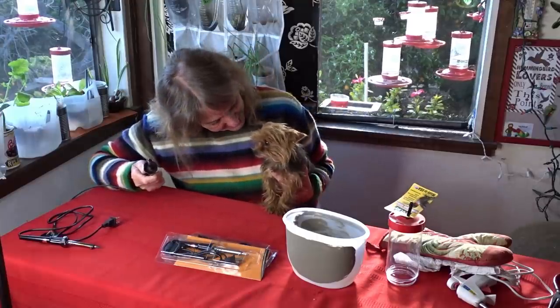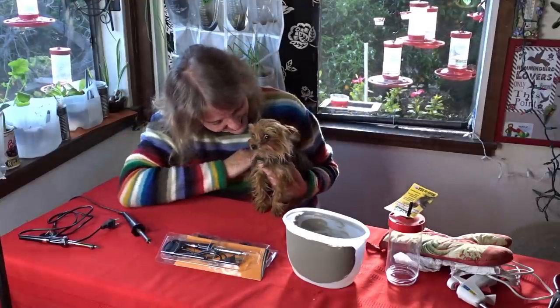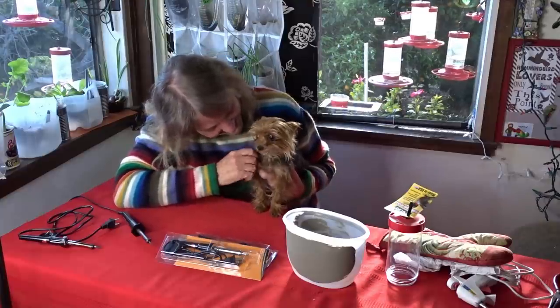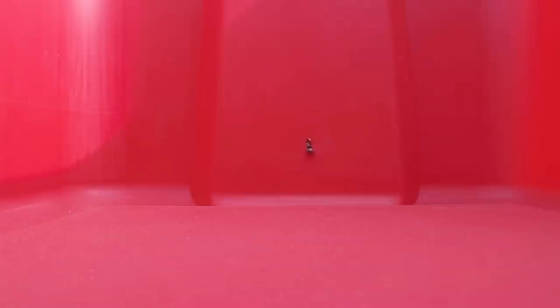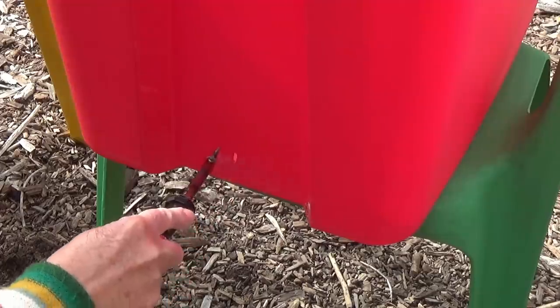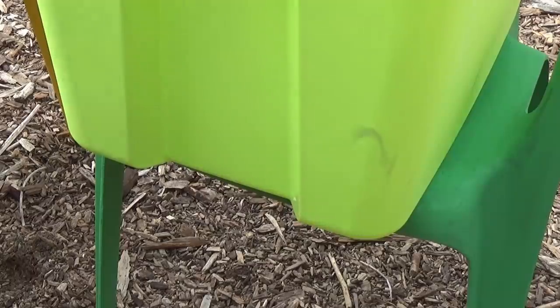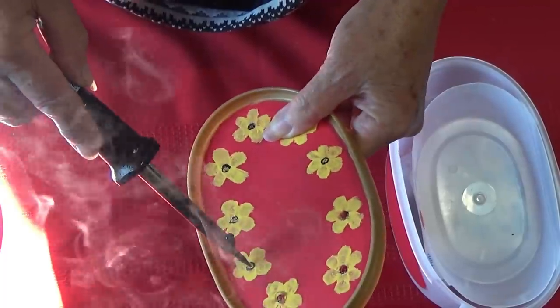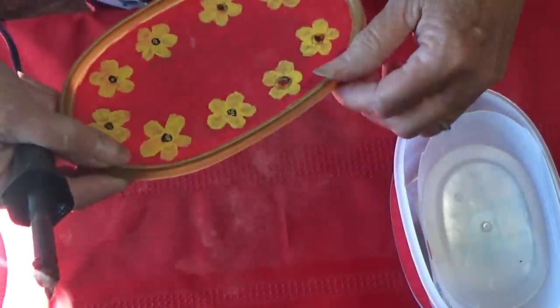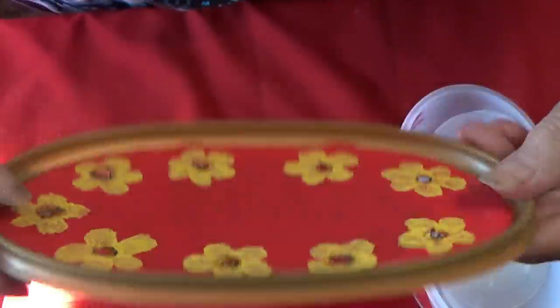Hi, today I'm going to show you how to clean a soldering iron that you may be using for making holes in containers for your garden or possibly working on crafts. Like I make hummingbird feeders out of plastic. The plastic gets on the end and you need to clean it off, and this is the fastest, easiest way to do it.